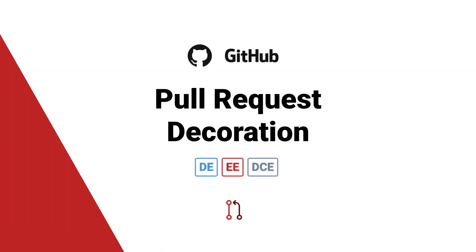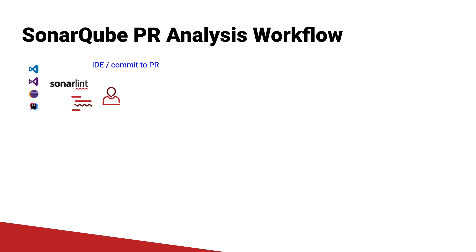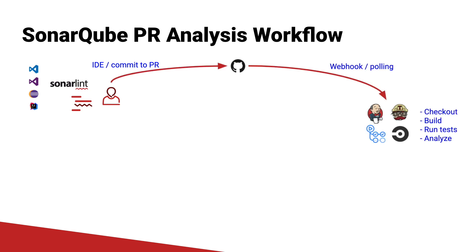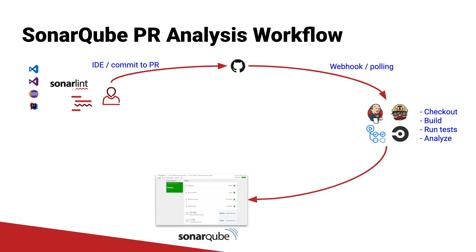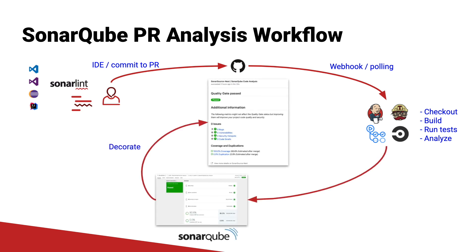Let's see firsthand how Sonar Cube integrates with GitHub and what it does for PRs. This feature is available in Sonar Cube starting with Developer Edition and it's easy to request a free trial on sonarcube.org. Before we see the live demo, let's take a quick look at a typical workflow. We start with an IDE, we're ready to commit our code to a PR, so we open that up which then kicks off our CI system, and that's going to kick off a Sonar Cube analysis. It's going to return a whole slew of code quality metrics that get decorated right back into GitHub. Let's take a look at what that looks like live.